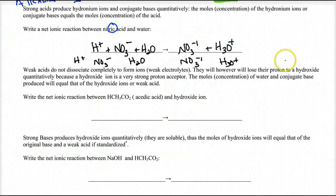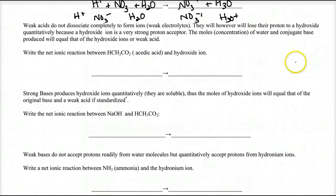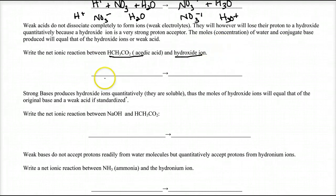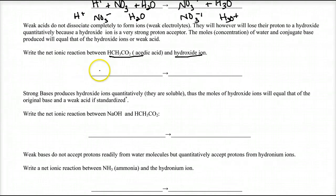There are no spectators, so the net ionic equation is just what's written. Now let's go with a weak acid — acetic acid, which is vinegar. This hydroxide ion could have come from sodium hydroxide, lithium hydroxide, or similar. I know acetic acid is a weak acid, and if you're not one of the top six strong acids, you do not completely dissociate. You stay together more than you dissociate.